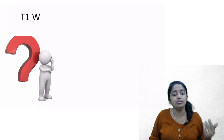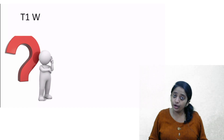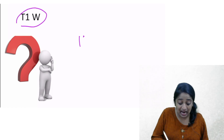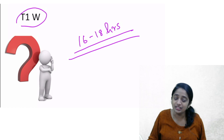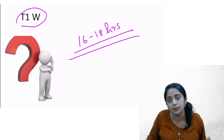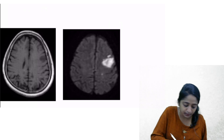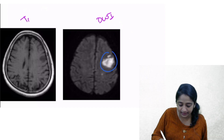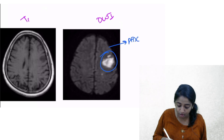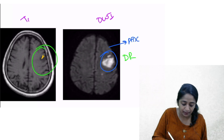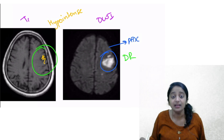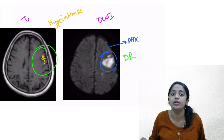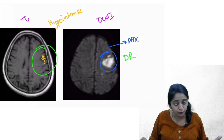Now coming to T1-weighted imaging. When can you expect change? It takes as long as 16 to 18 hours from onset before you get change on T1-weighted imaging. So is it a useful sequence to diagnose acute infarct? No. But you should know what appears: on T1-weighted, you see a hypointense area corresponding to the area of diffusion restriction. Most pathologies in T1 appear hypointense, so it is not specific.